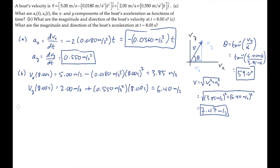Part c asks for the same thing for the boat's acceleration at that time. First calculate the components. Finding that ax, when t equals 8 seconds, is minus 0.288 meters per second squared. And ay, which is constant in time, equals 0.550 meters per second squared.